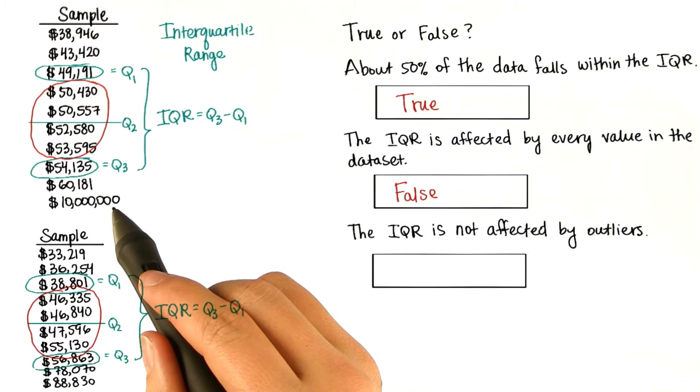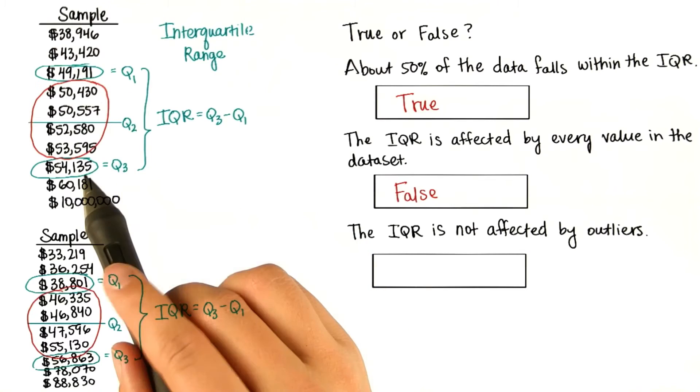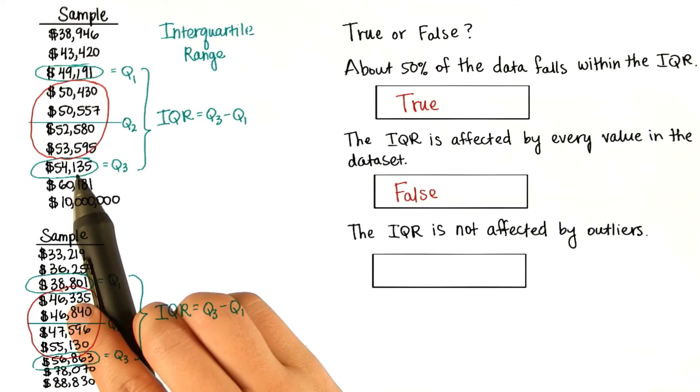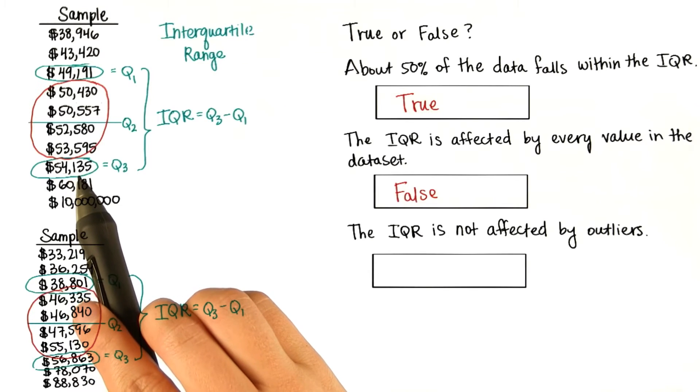We could make this one a lot bigger, and the IQR would still be the same. However, we could change this. If we made it say 59,000, then the IQR would get a little bigger.